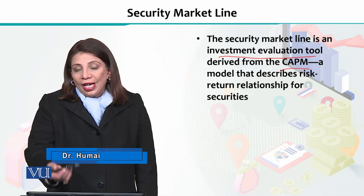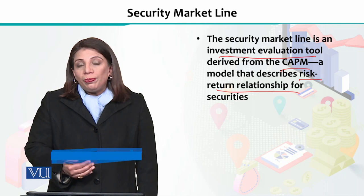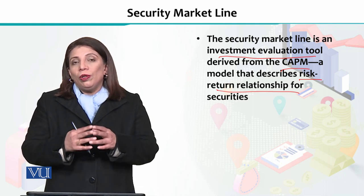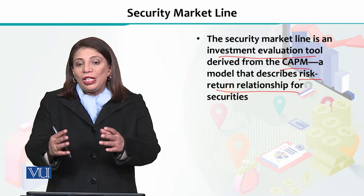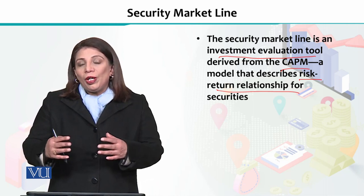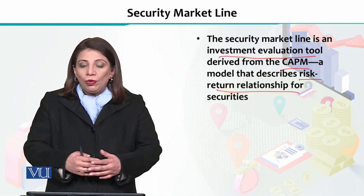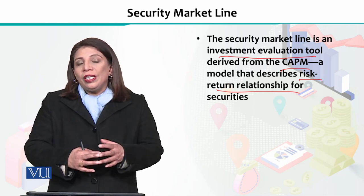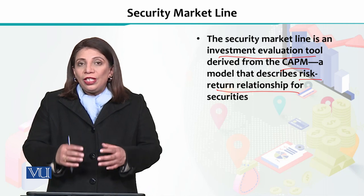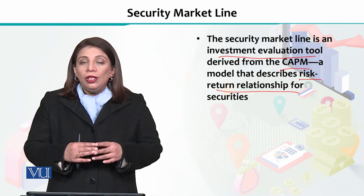What is the Capital Asset Pricing Model? We discussed this in detail — we have a risk-return relationship for a specific security. We have expected return, excess market return, and excess return on that particular security. When we plot the equation, the line which you get is called the Security Market Line.